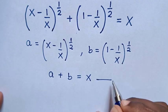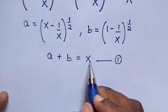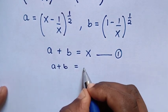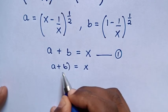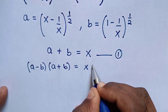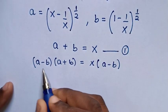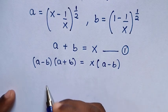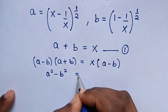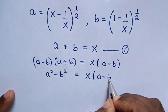We call this the first equation. From equation 1, which is a plus b equals x, we multiply both sides by (a minus b). This gives a perfect square difference: a squared minus b squared equals x times (a minus b).